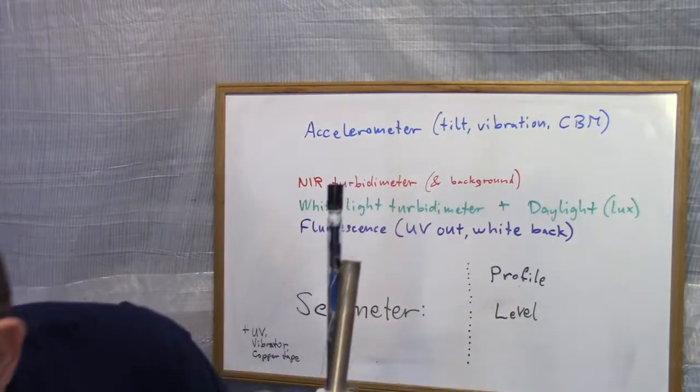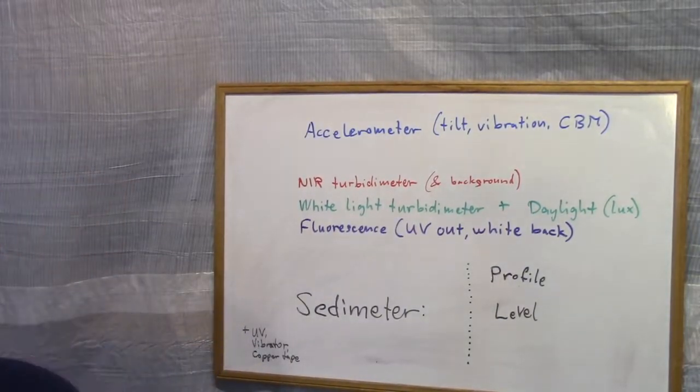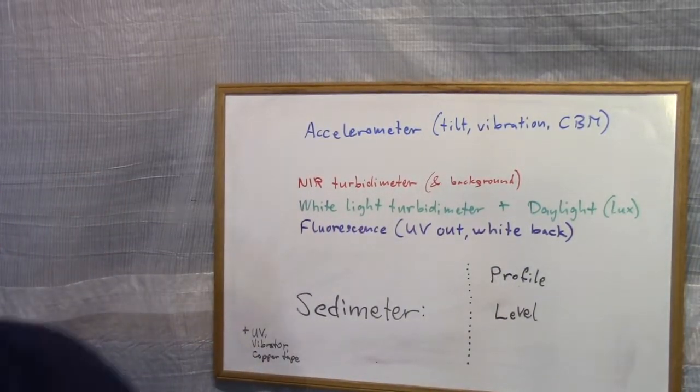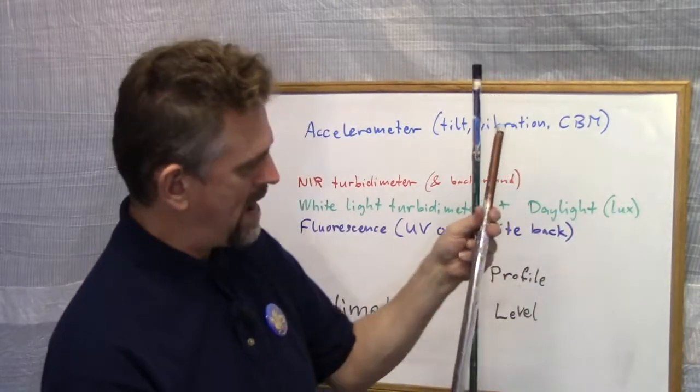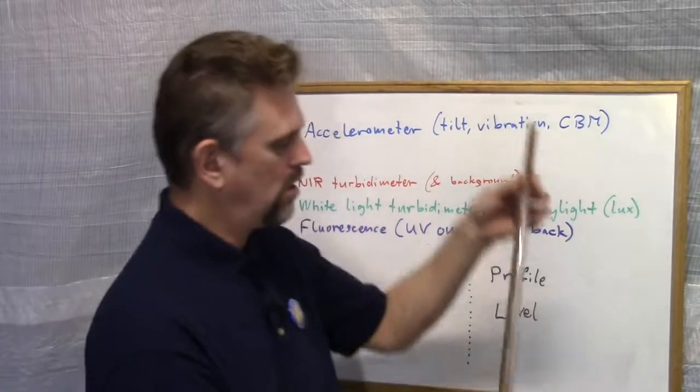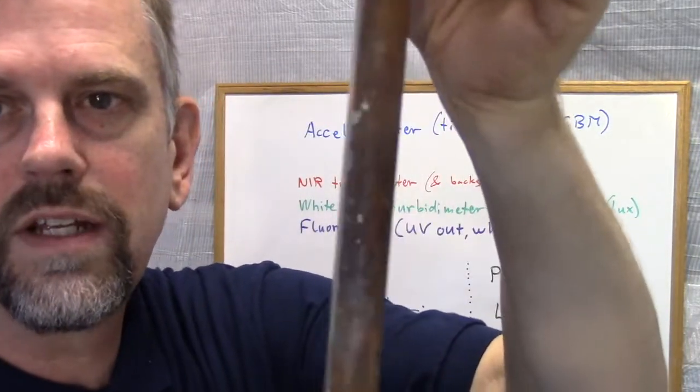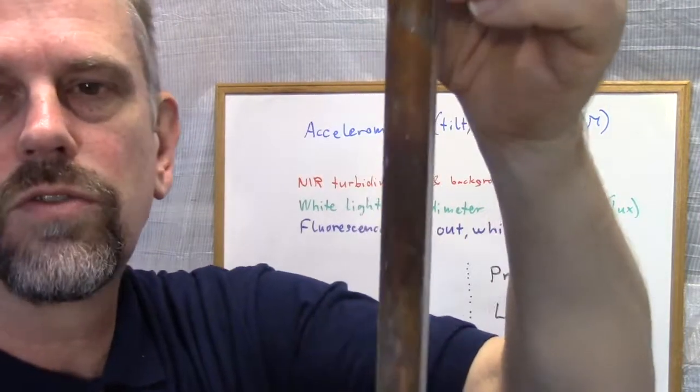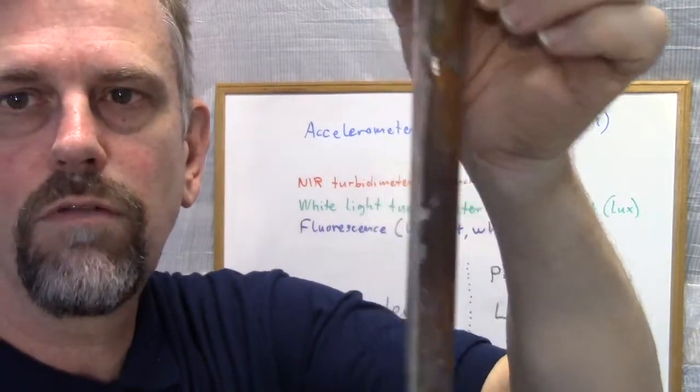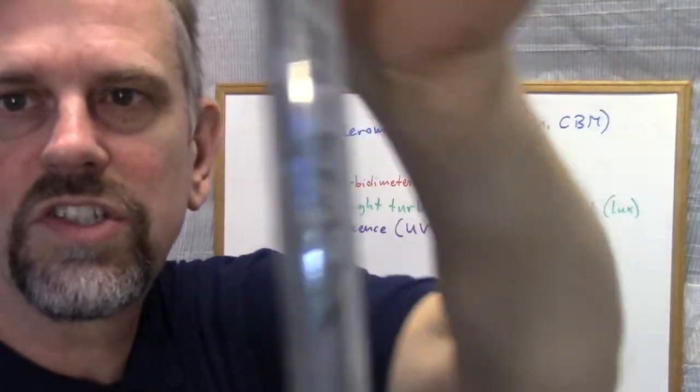That's how it is for eight weeks without any antifouling installed. The other two had copper tape installed on the rear side of the holder tube. And as you can see, nothing has grown. There are no barnacles or algae on the copper itself. And on the front, it's much less. There is some, but much less than on the reference one.